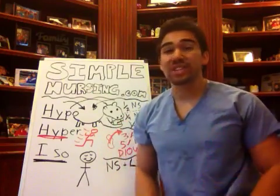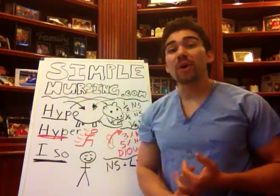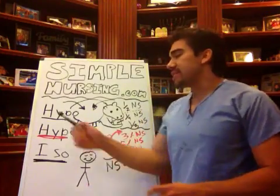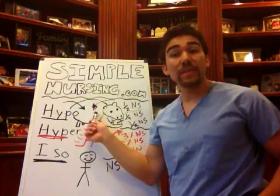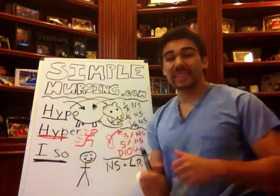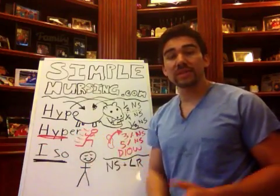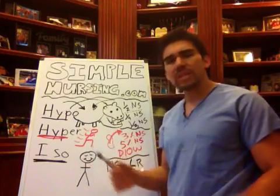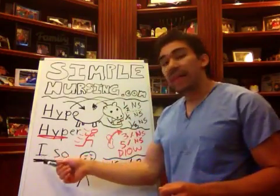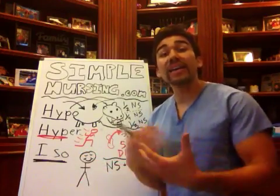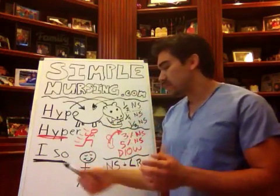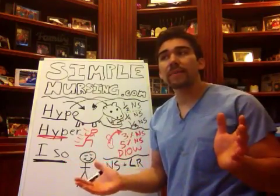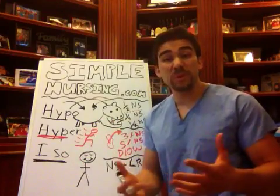Alright guys, so here's our second edition of hypo, hyper, and isotonic fluids. So last video, I showed you guys that hypotonic fluids were pretty much our hippo-tonic fluids because all the fluid goes into the cell. Our hypertonic fluids were pretty much the skinny cells because hyper people are pretty skinny, so all that fluid is coming out of the cell. Last one is isotonic — isoperfect — so that means there's no fluid exchange, it's just a perfect cell chilling, no fluid shifts, no osmosis going on.